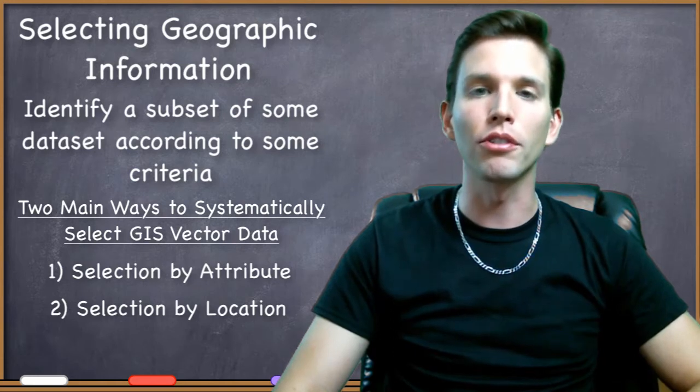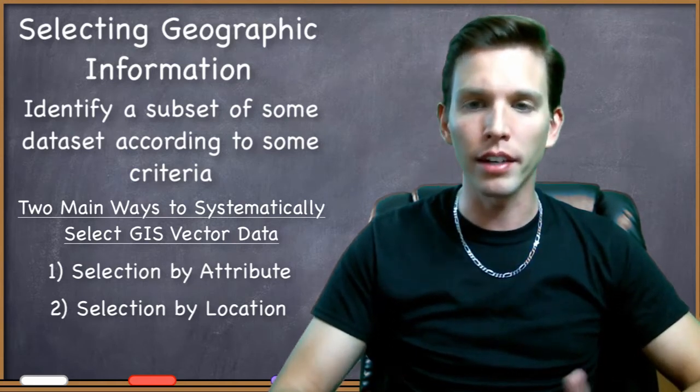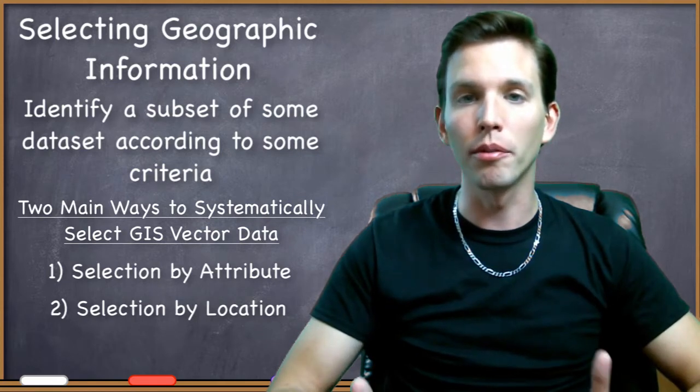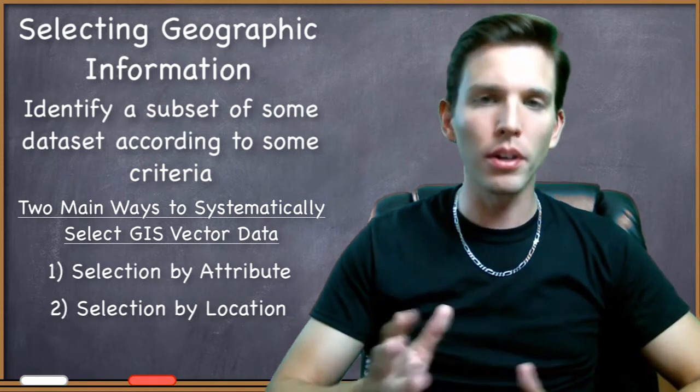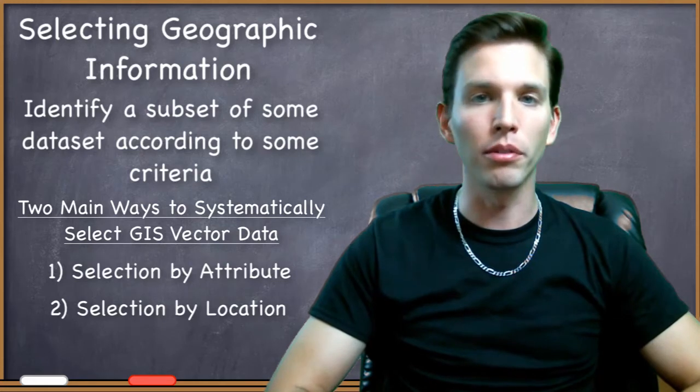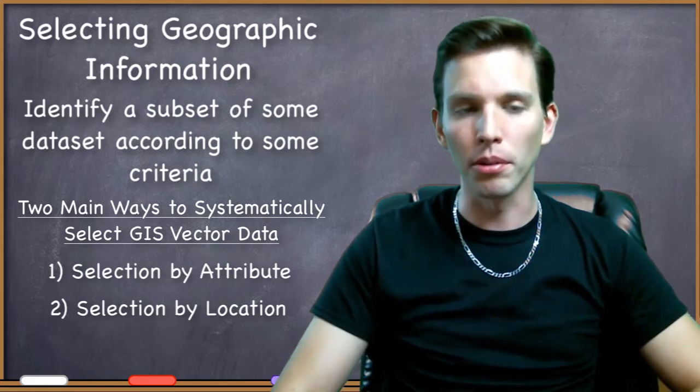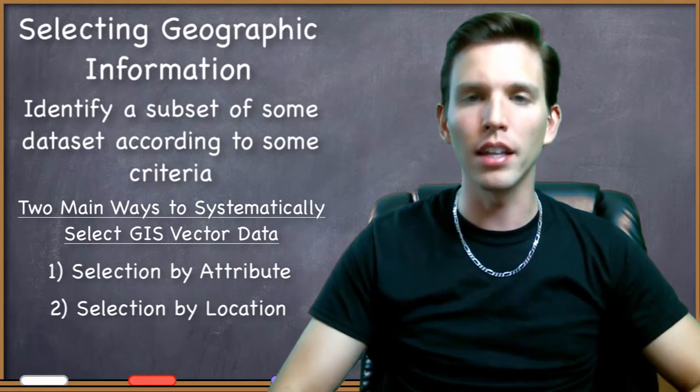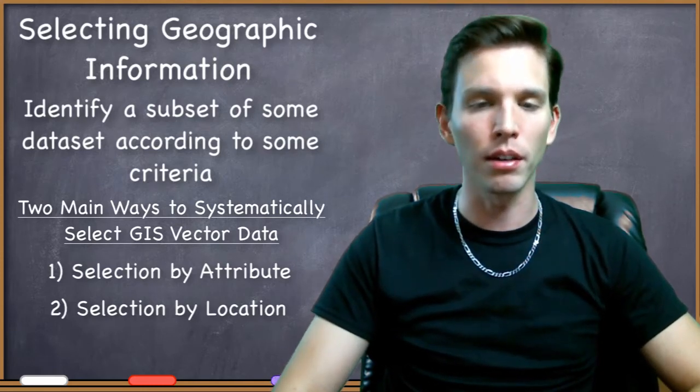We could also just open up the attribute table of the vector data files and arbitrarily choose some of those rows that interest us. Yes, we can definitely select information like that. That is a way of selecting GIS data.